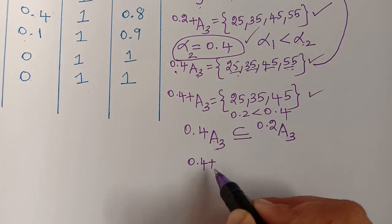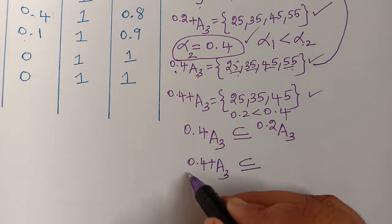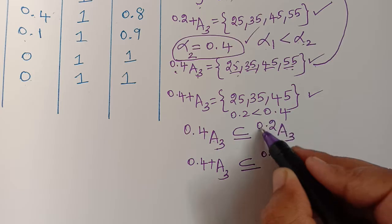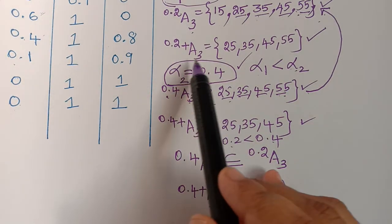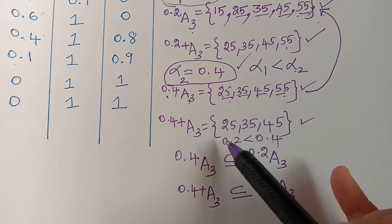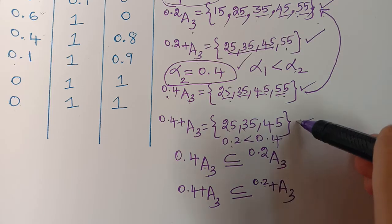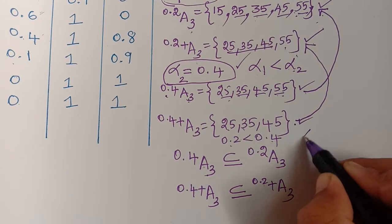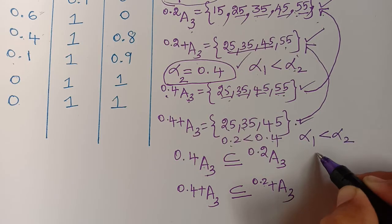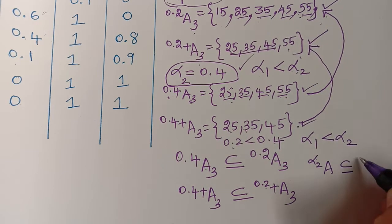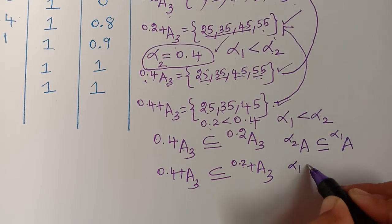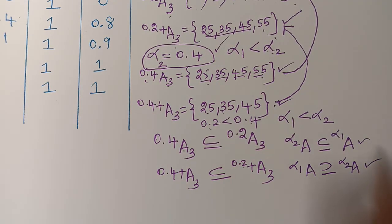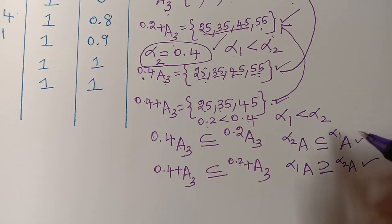The same property applies for strong alpha cuts. The strong 0.4⁺-A3 = {25,35,45} is a subset of the strong 0.2⁺-A3 = {25,35,45,55}. So the property is: if alpha1 < alpha2, then alpha2-cut of A ⊆ alpha1-cut of A, and similarly for strong alpha cuts.